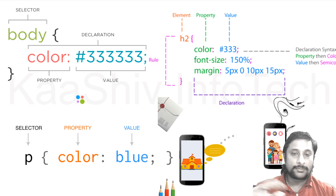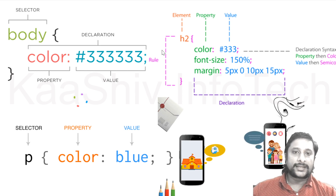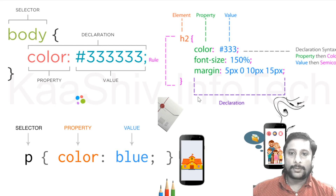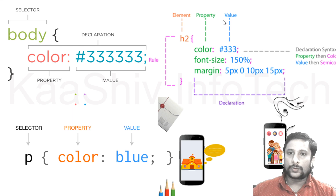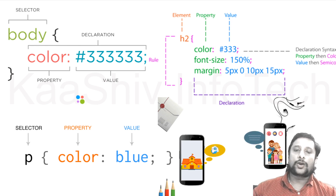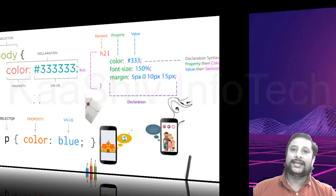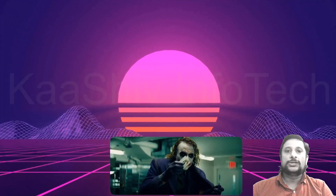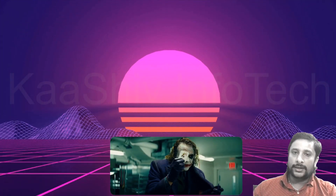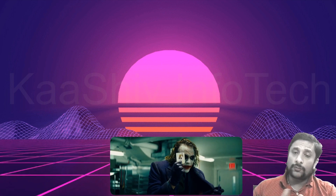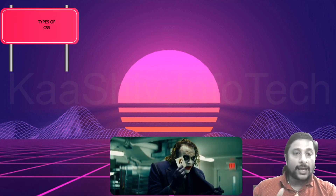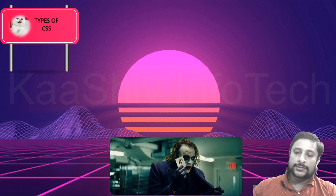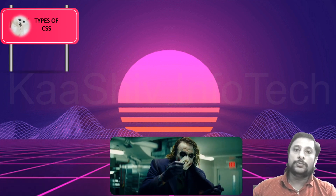What is HTML video element? H2 tag rule declare - declaration value. Semicolon. Here are concepts of CSS declaration. Now CSS - types of CSS - major major.